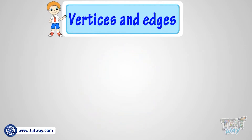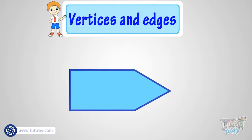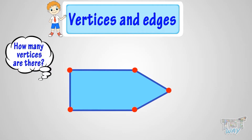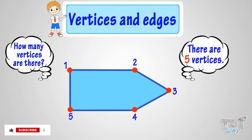Now here we have another figure. Let's count its vertices and edges. We know vertices are the points where two edges meet, or they are the corners in the figure. So let's count: one, two, three, four, five. So there are five vertices in this figure.